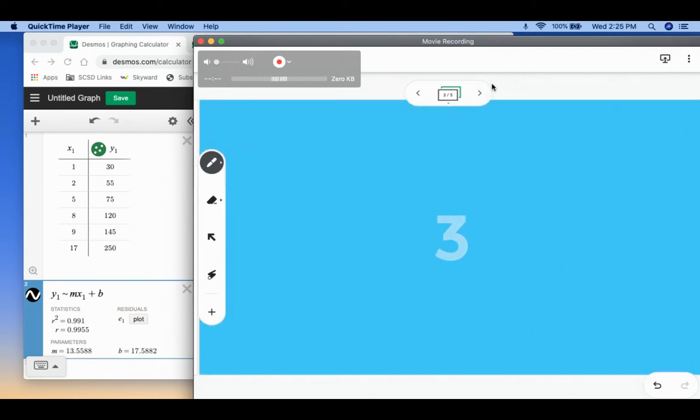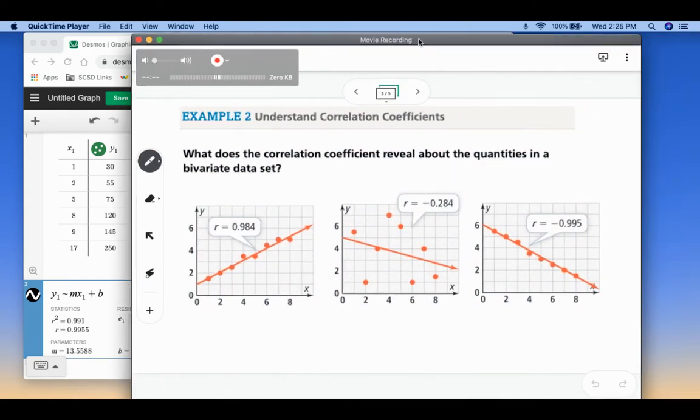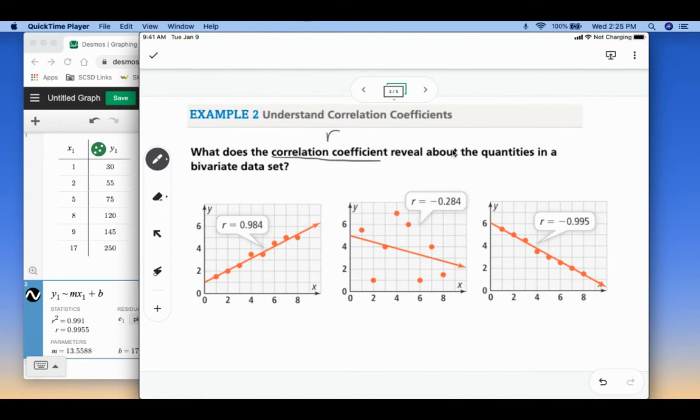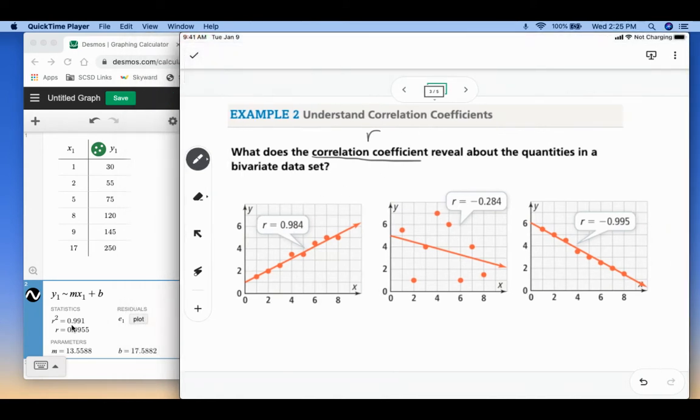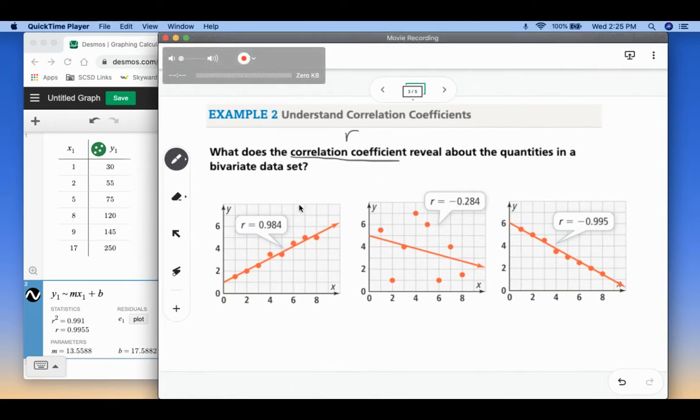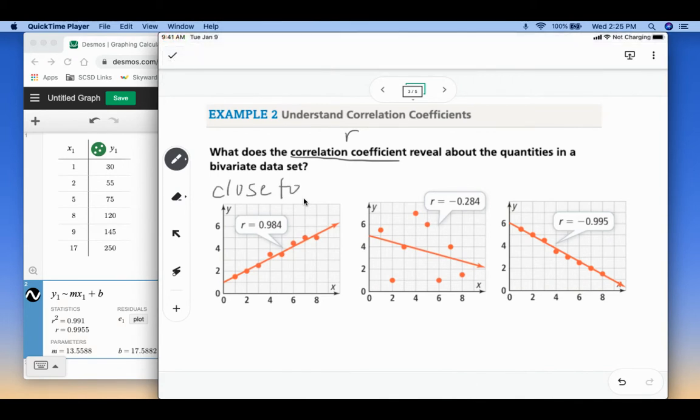Okay, so our next example is talking about what does the correlation coefficient reveal about the quantities. So correlation coefficient is our r value. So if you look back at my example I just did, you can see it says r squared and it says r. So r is our correlation coefficient. So if r is close to one, like this first example, then it is going to be a strong positive correlation.